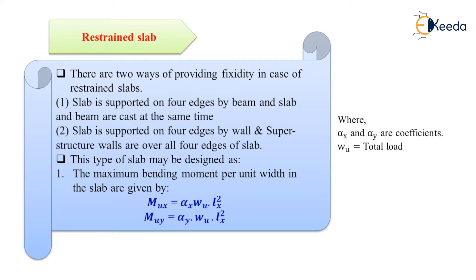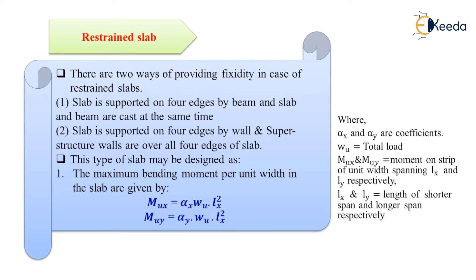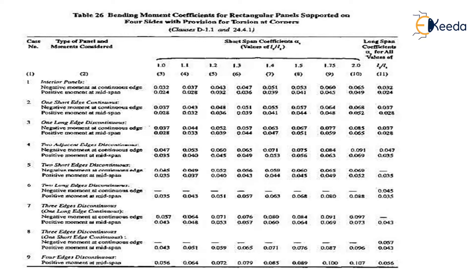Here, alpha X and alpha Y are bending moment coefficients, and WU is the total load. MUX and MUY are the moments on a strip of unit width spanning LX and LY respectively, where LX is the shorter span and LY is the longer span. This formula can be obtained from Annex D of IS456, page 90. The bending moment coefficients alpha X and alpha Y for restrained slab are given in Table 26 of IS456, page 91.